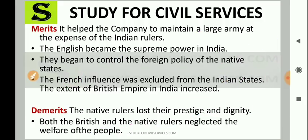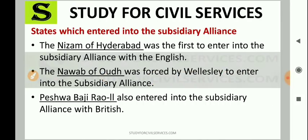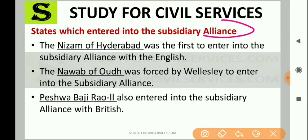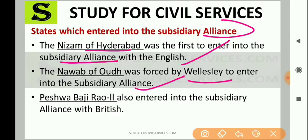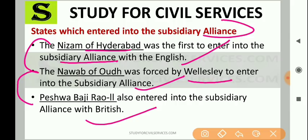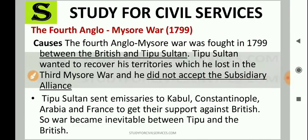The subsidiary alliance system was introduced by Lord Wellesley. The Nizam of Hyderabad was the first to enter into subsidiary alliance with the English. Then the Nawab of Awadh was forced by Wellesley to enter it. Peshwa Bajirao II also entered into the subsidiary alliance with the British. This topic will be studied in more detail in higher classes.